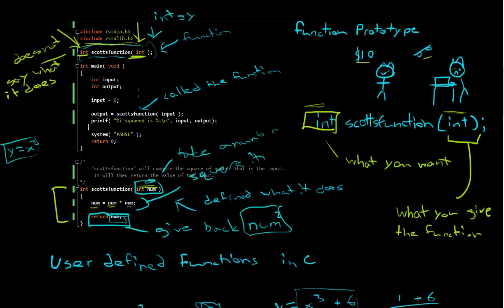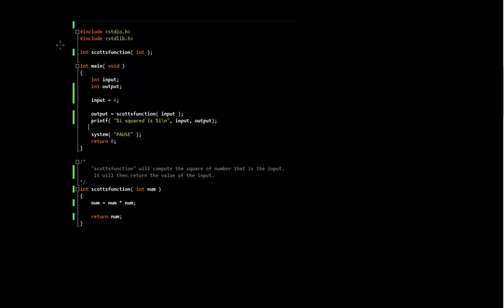So basically, what this program does: I've told the computer, hey, here's a function. And underneath, in int main, you write what you want back and what you're willing to give it. This whole thing here was the function prototype, which just says: this is the kind of thing you want to give it, and the kind of thing you want back.